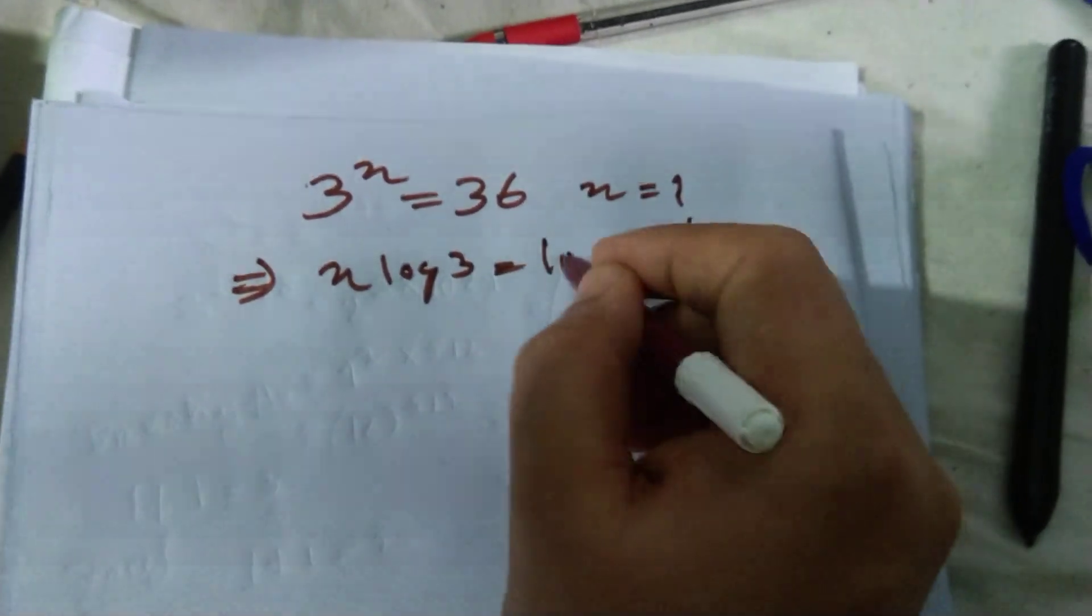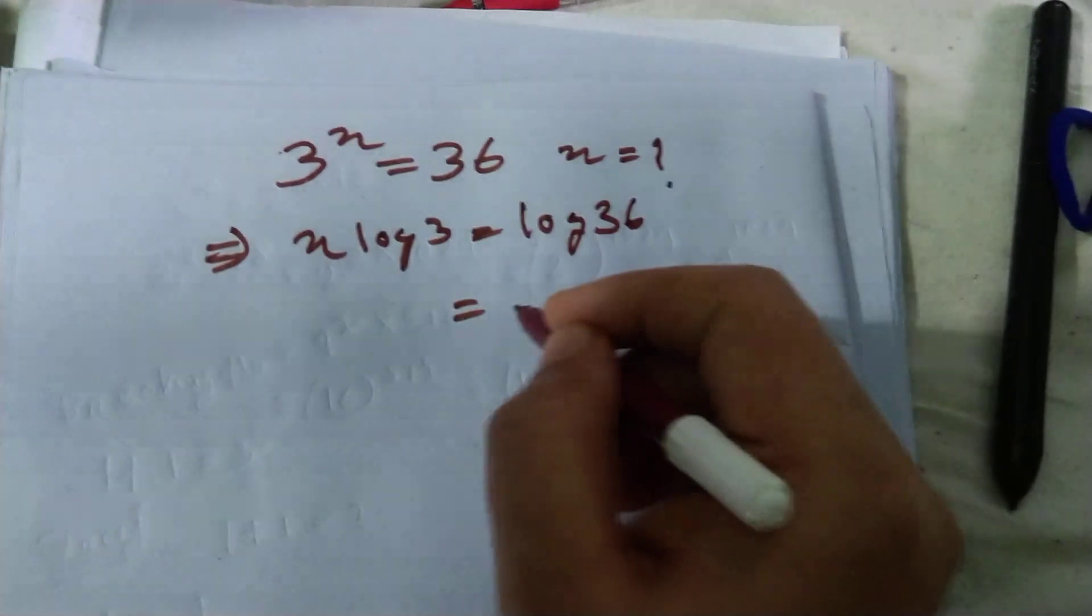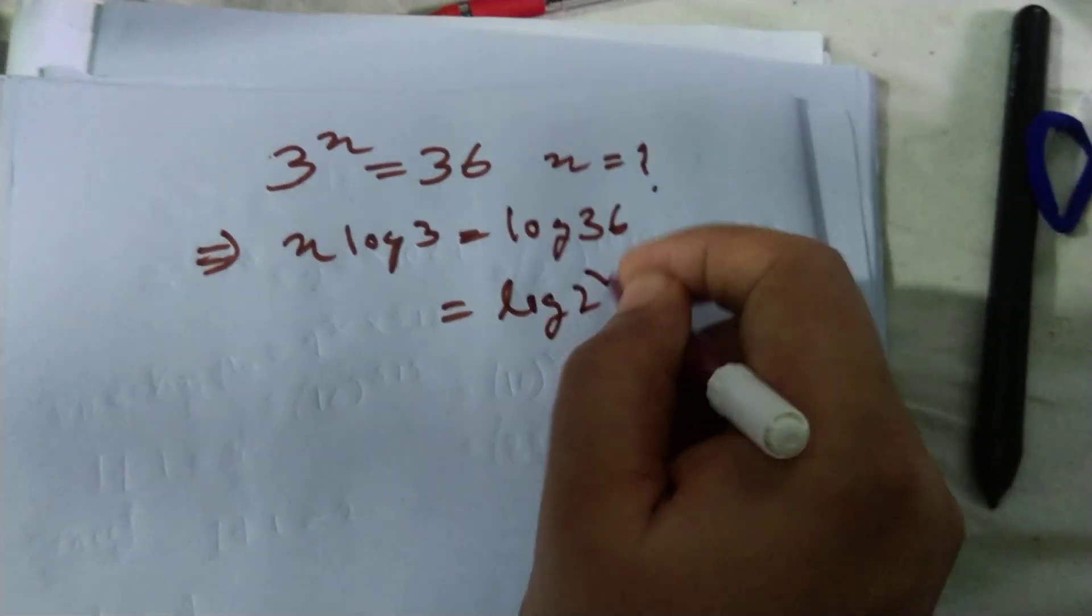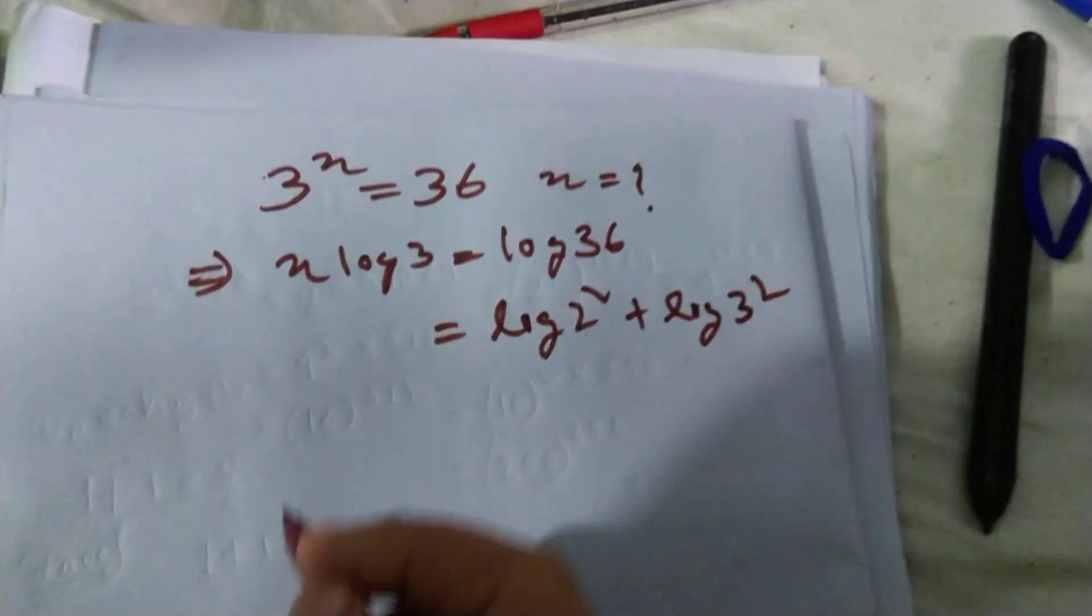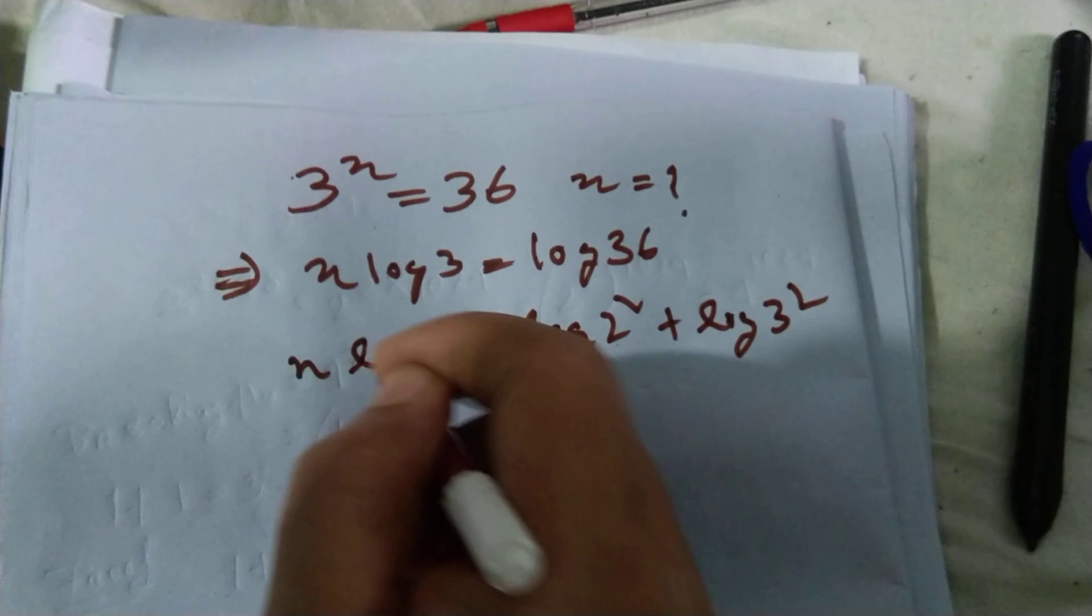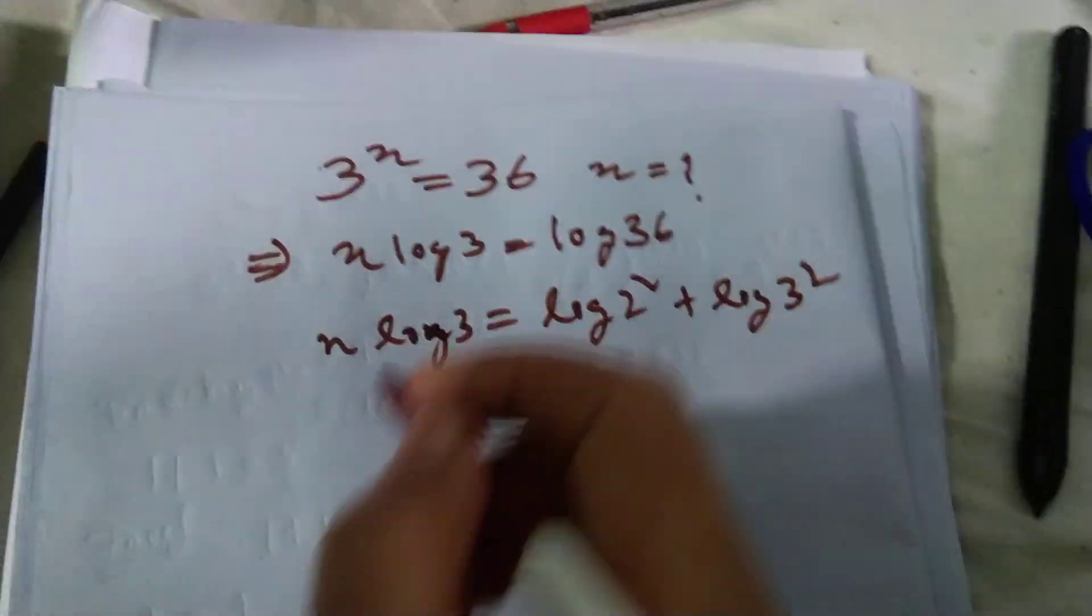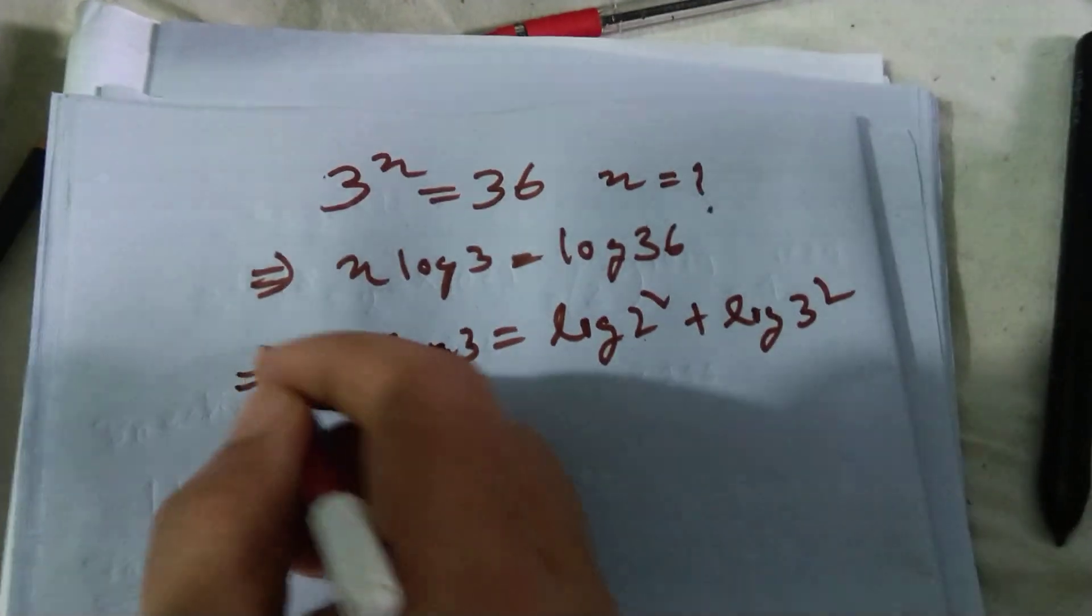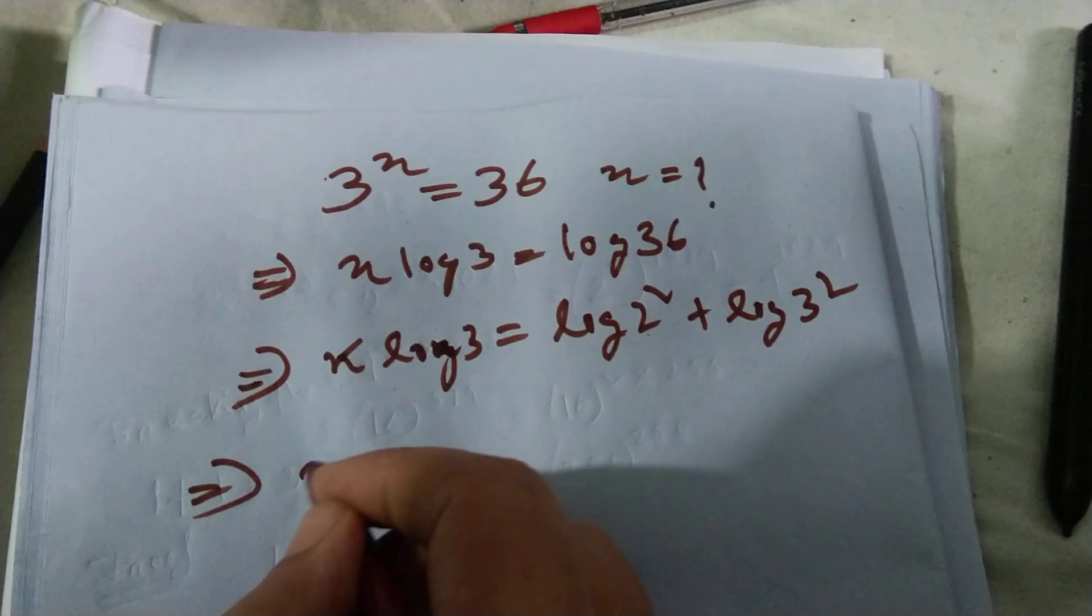Log 36 can be written as log 2 square plus log 3 square. So x log 3 equals log 2 squared plus log 3 squared. Now we can write x is equal to...